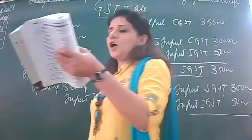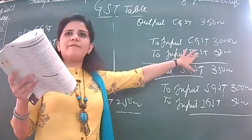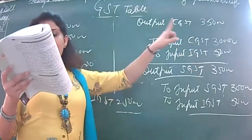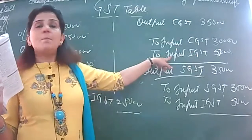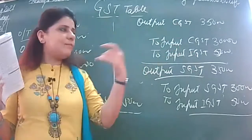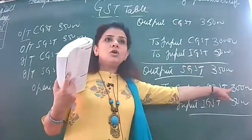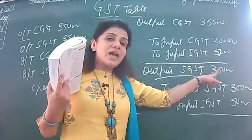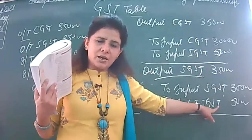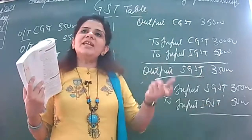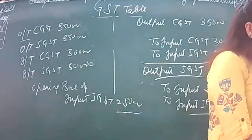As per GST, first set off input CGST 30,000 against output CGST 35,000. After setting off, there is a balance of 5,000 — do not pay to the government yet. This balance of 5,000 should be set off with input IGST. After that we are left with 25,000 of IGST. Then set off input SGST 30,000 against output SGST 35,000 — again a 5,000 balance, which is adjusted from the remaining input IGST of 20,000. After that adjustment, 15,000 of IGST is to be carried forward to the next quarter.